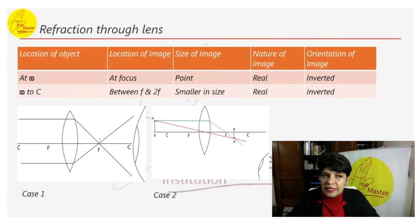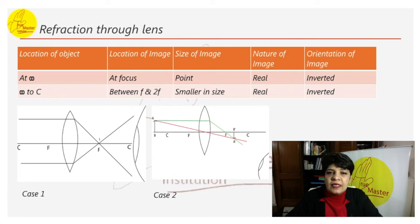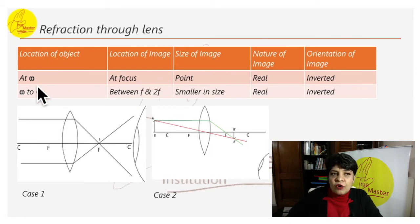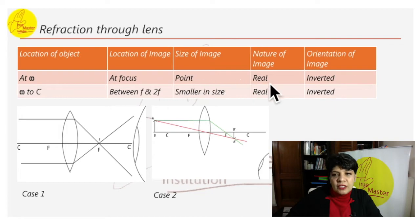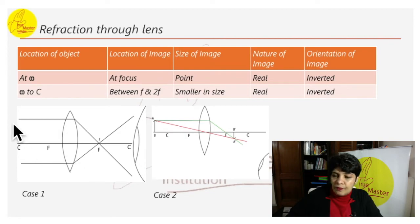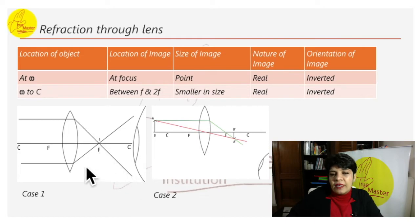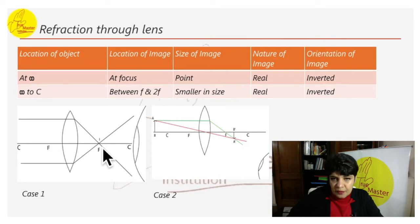Refraction through lens — six cases. Case 1: object is at infinity. The image is formed at the focal point. The size of the image is a point, the nature is real, and the orientation is inverted. The ray coming in bends down at the lens and converges at the focal point.